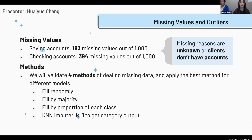We have serious missing value issues, especially for checking accounts — 394 missing out of 1,000 instances. We have four methods to deal with missing data: filling randomly, by majority, by the proportion of each class, and also KNN imputation. We will validate all four methods in our modeling part and choose one. For our EDA report, we temporarily label the missing values as unknown to better understand the dataset.